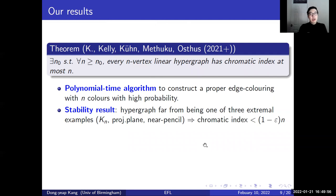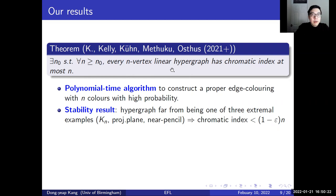So let me describe our recent result. We were able to show that the EFL conjecture is true for all large linear hypergraphs: for every sufficiently large integer n, every n-vertex linear hypergraph has chromatic index at most n. Because our proof is constructive, it actually gives a polynomial time randomized algorithm to produce a proper edge coloring with n colors for an n-vertex linear hypergraph with high probability.